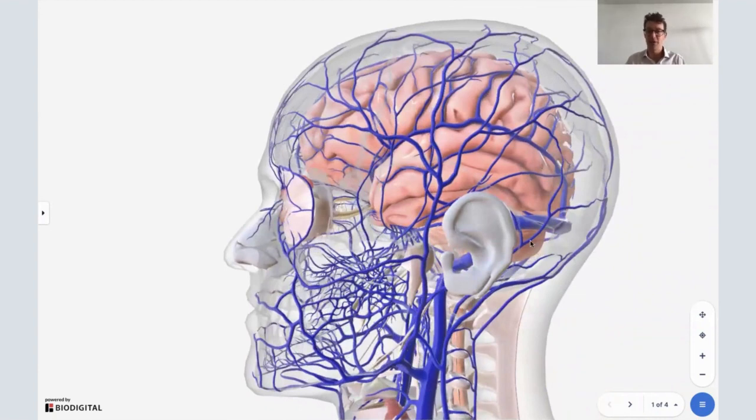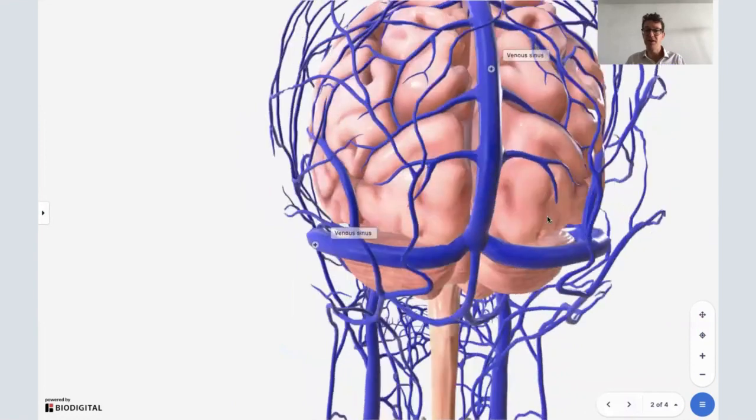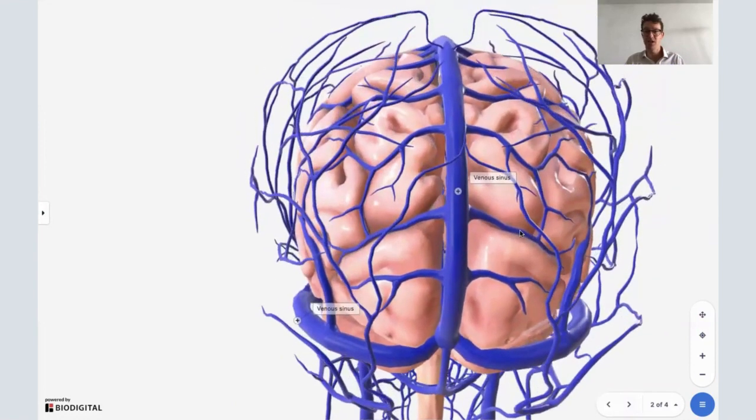Here is the brain, obviously. This is where this condition occurs, and this is the venous system. And specifically, I've stripped away the skull here to show you these venous sinuses, which is where this condition occurs.